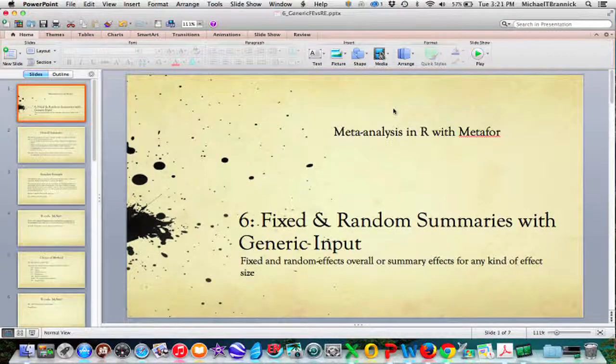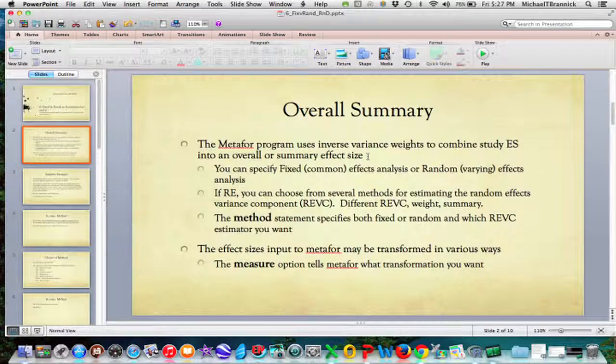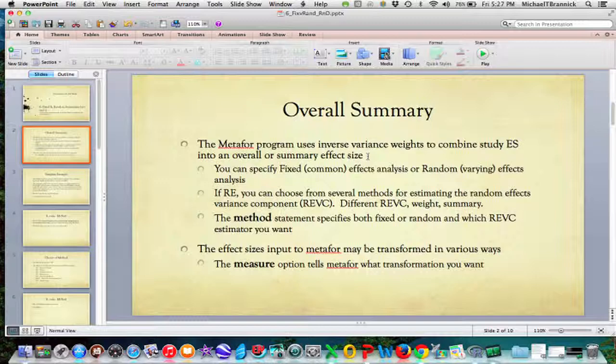This is video number six. It's about how to get fixed and random summary effect sizes using generic input with Metafor in R. To get the overall summary, Metafor uses inverse variance weights to combine the effect sizes from the different studies.